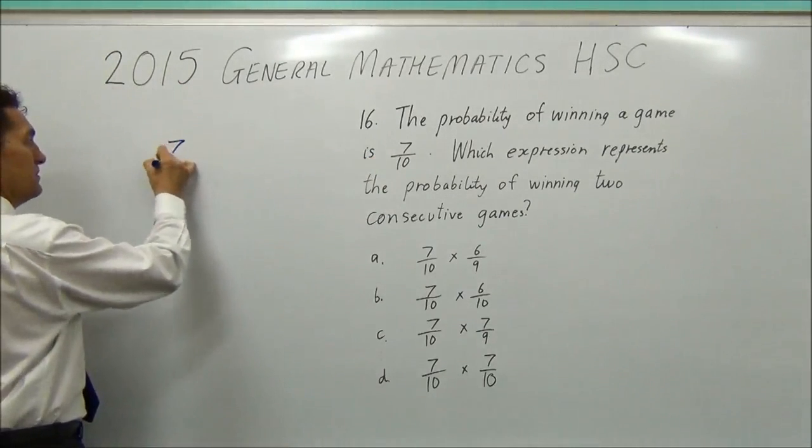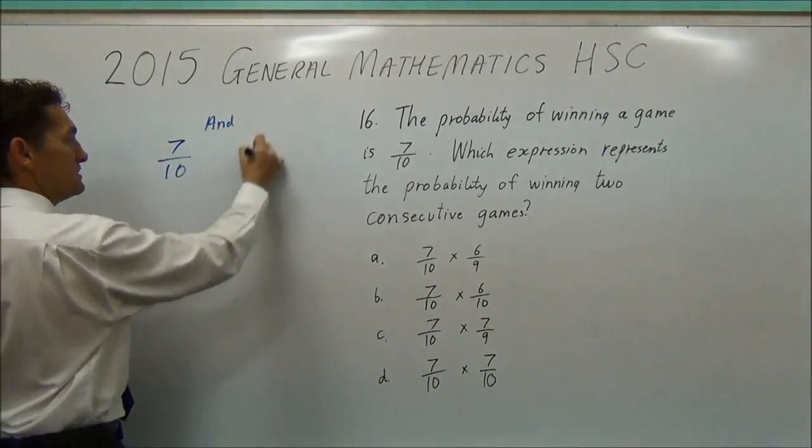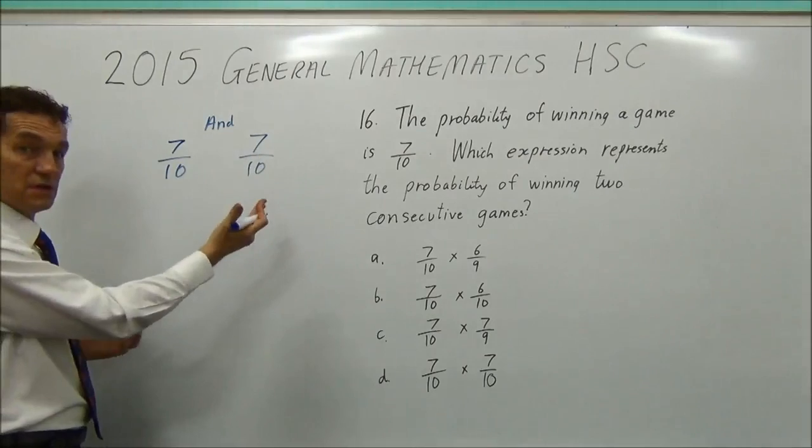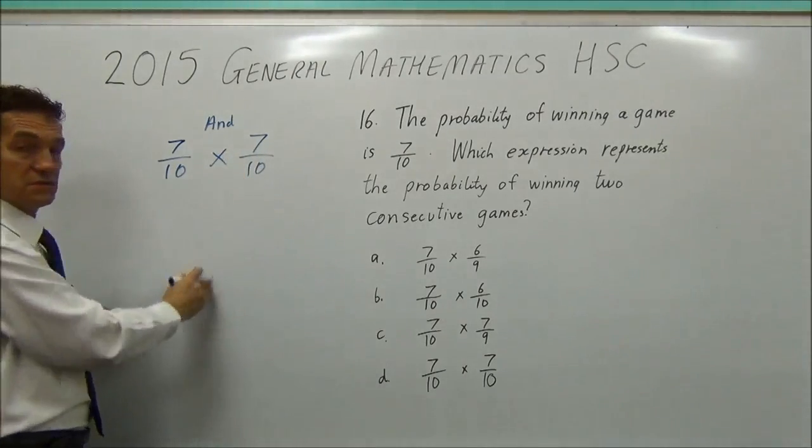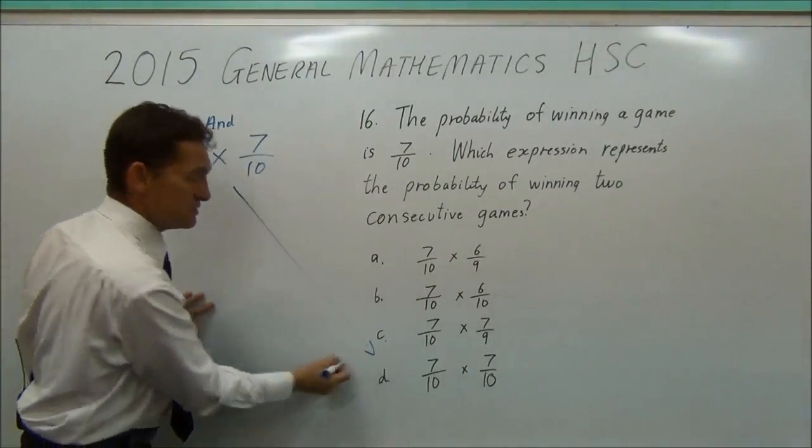So I want to win the first game, I've got 7 on 10, and I want to win the second game, it's 7 on 10. And the probability is multiplication. So I want this one multiplied by this one, which is quite easy. It's D.